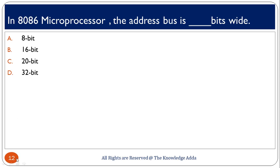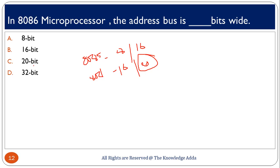Regarding the address bus in the 8086 microprocessor: in the 8085 we have an 8-bit data bus and a 16-bit address bus, but in the 8086 we have a 16-bit data bus and a 20-bit address bus. Please do not get confused — the address bus in the 8086 is 20 bits wide, meaning it can carry 20-bit addresses.